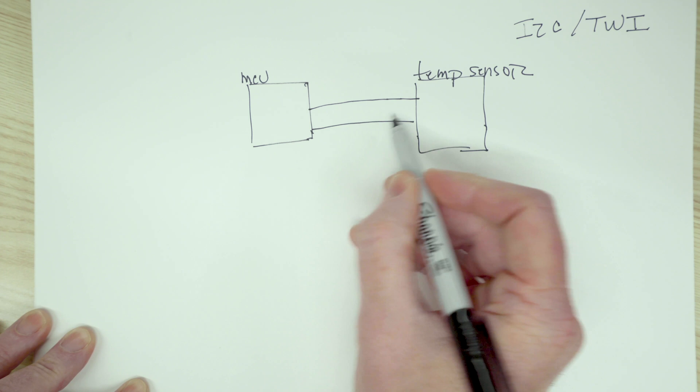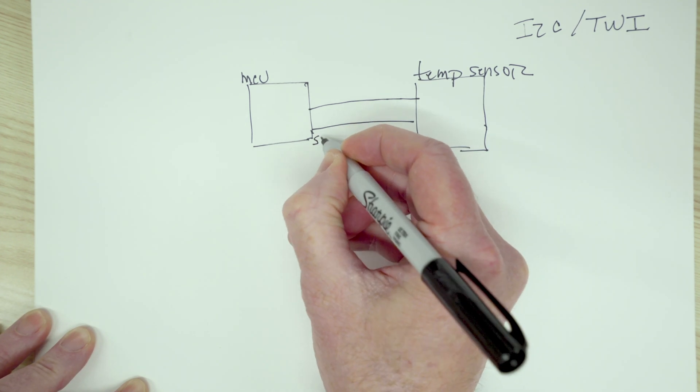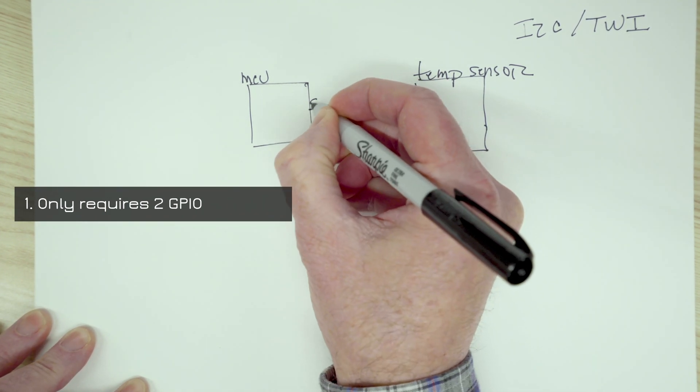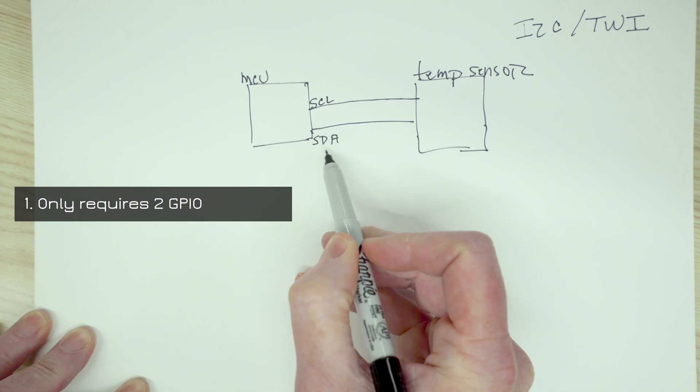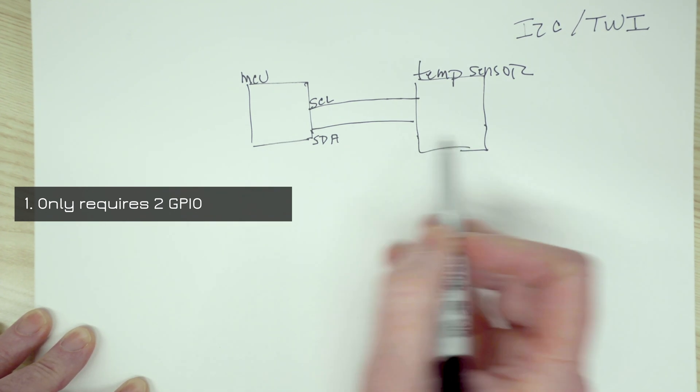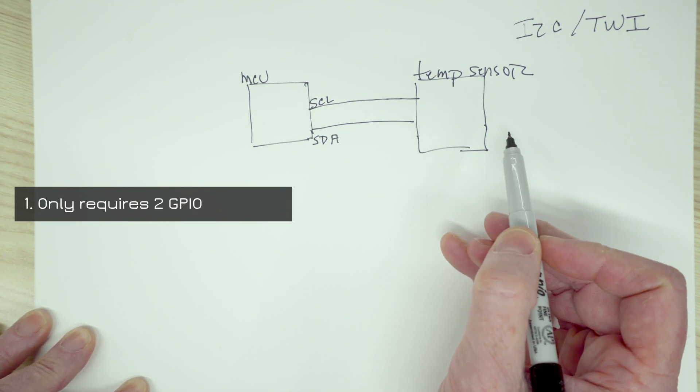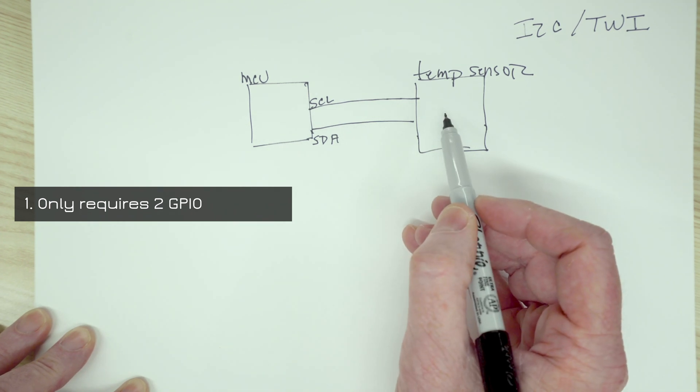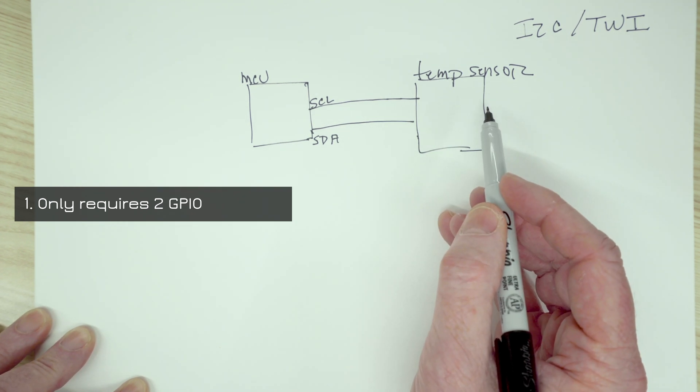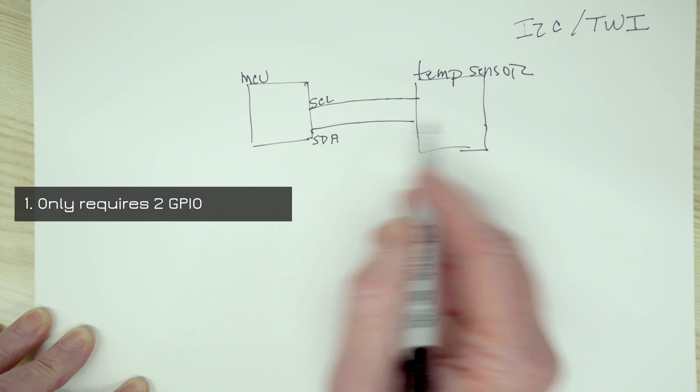And I2C is basically two lines. There is a line called SDA and a line called SCL. SDA is our data line and is also how we do our addressing, which we'll discuss in a second. And SCL is the clock line, which determines the frequency of communication between the devices.